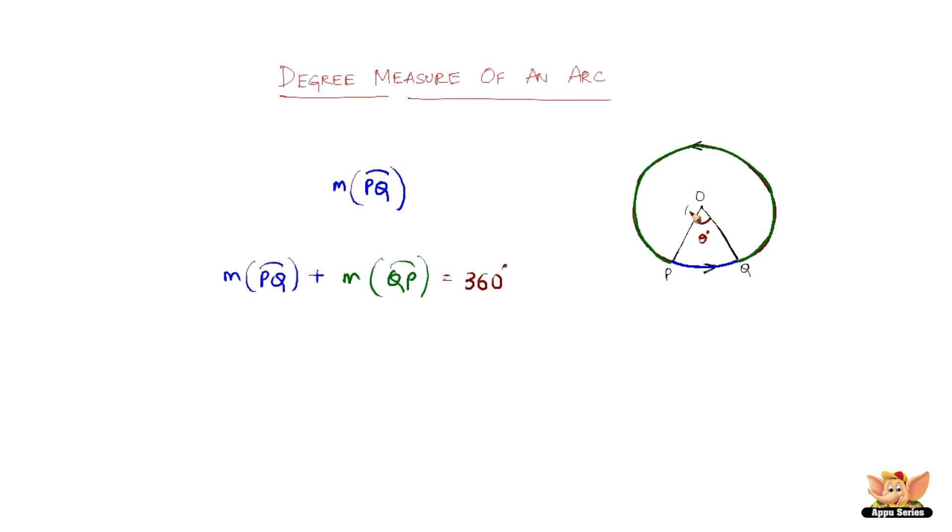So say for example, if we randomly take the degree measure of arc PQ to be, say, 65 degrees, then it will be 65 degrees plus measure of arc QP equal to 360 degrees. And measure of arc QP would be 360 degrees minus 65 degrees, which is nothing but 295 degrees. This video explains the degree measure of an arc, be it minor arc or a major arc.